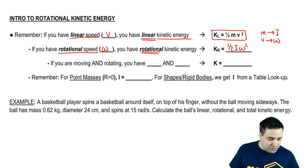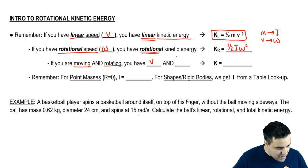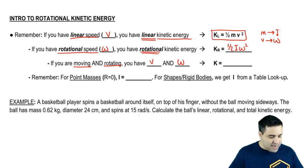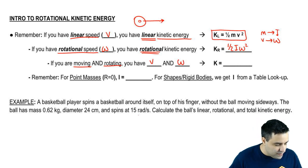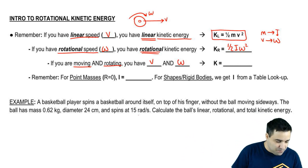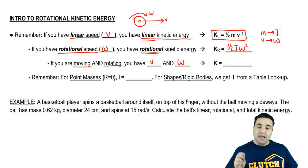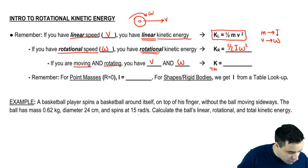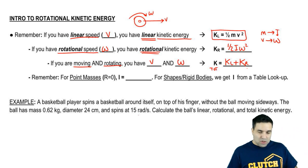Now on a special case, there's a special situation when you're moving and rotating. So you have a V and an omega. This is called rolling motion. And one example of this is if you have a toilet paper roll that is moving this way while rolling around itself. It has both kinds of motion. Therefore, it has both kinds of kinetic energy. So I'm going to say that the K total is KL plus Kr.